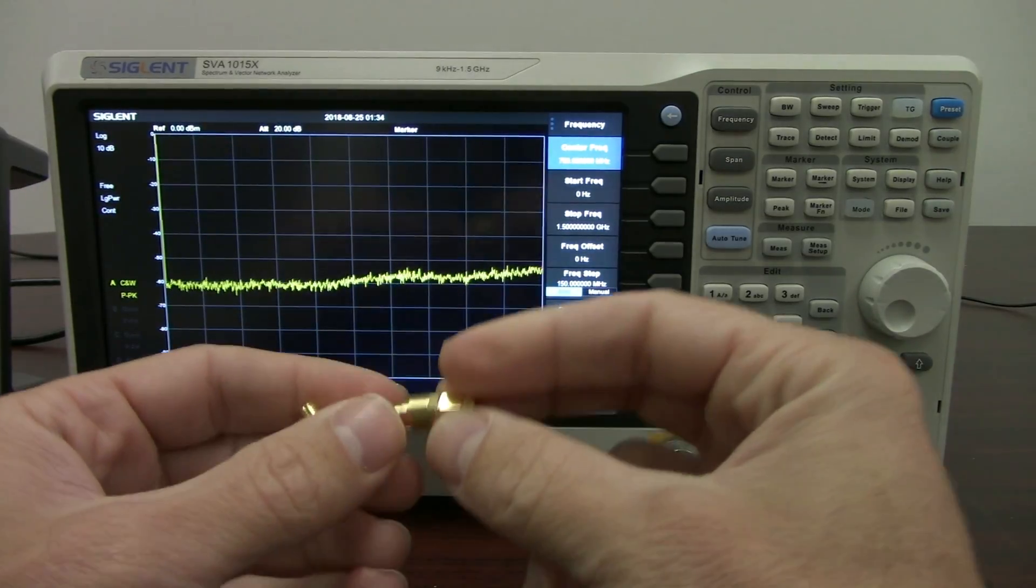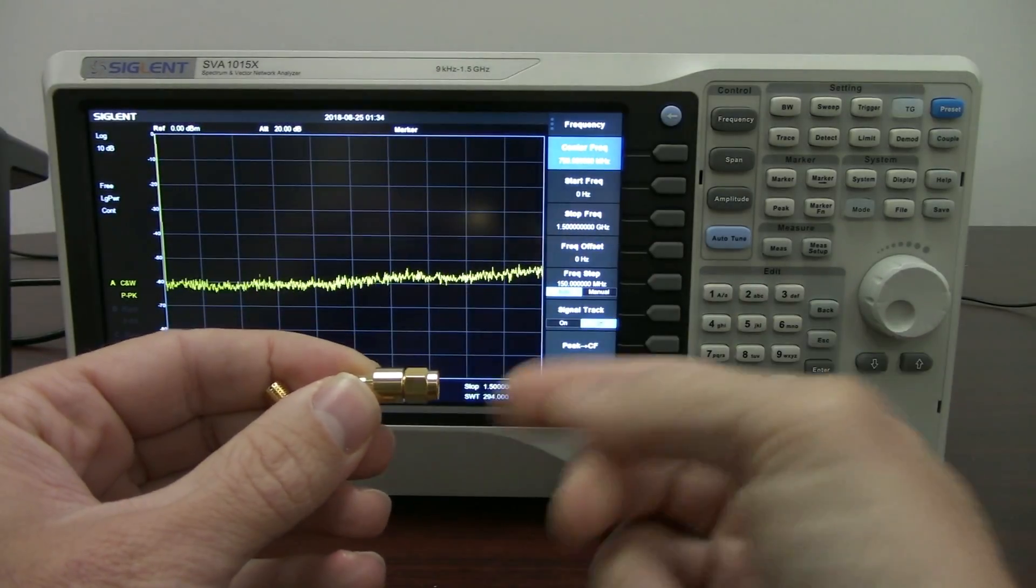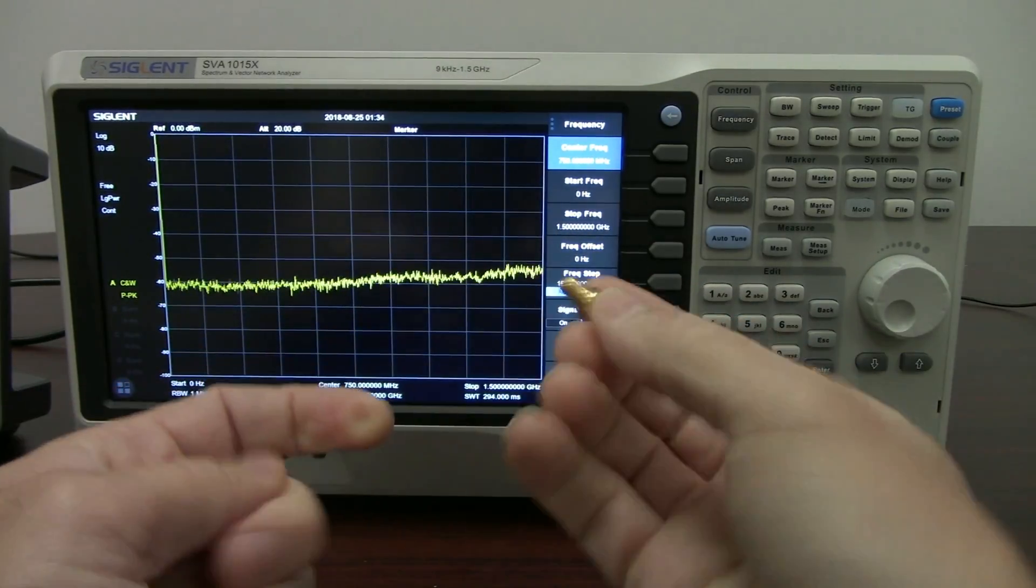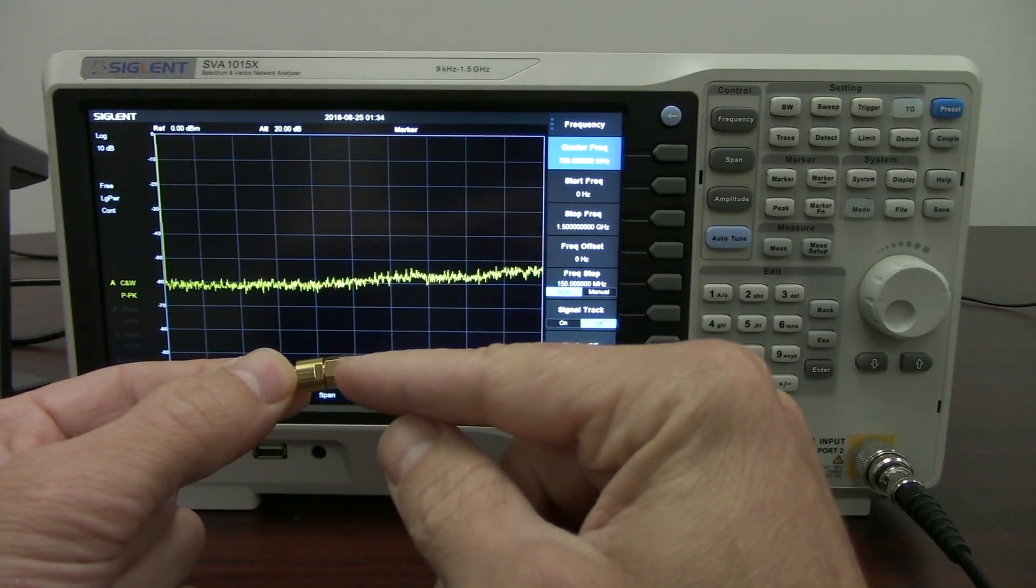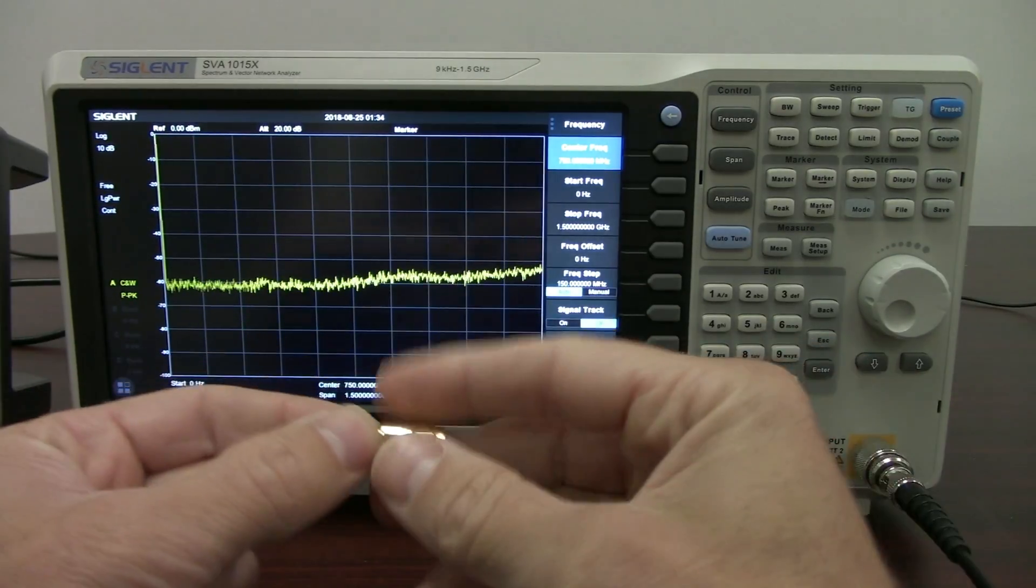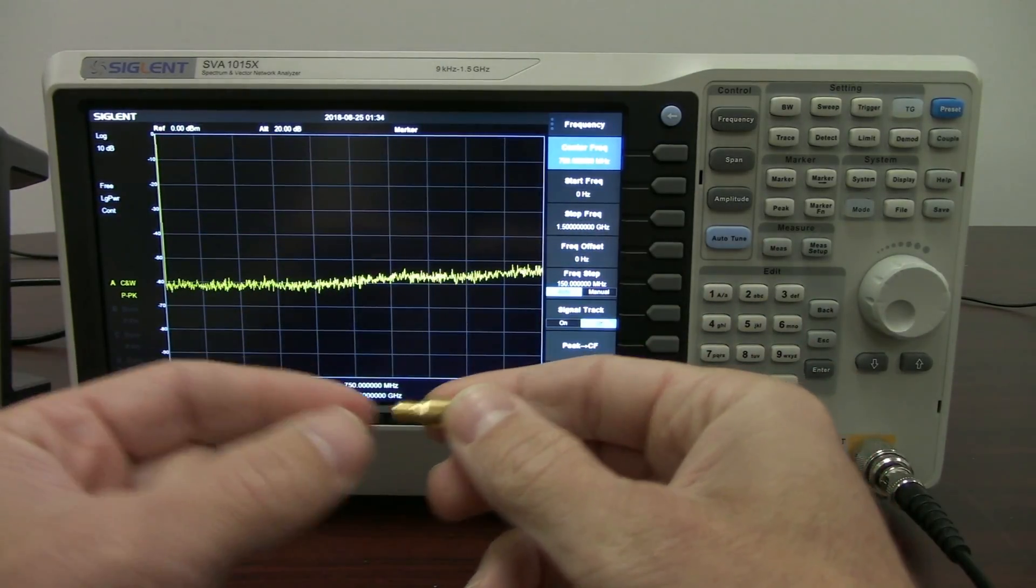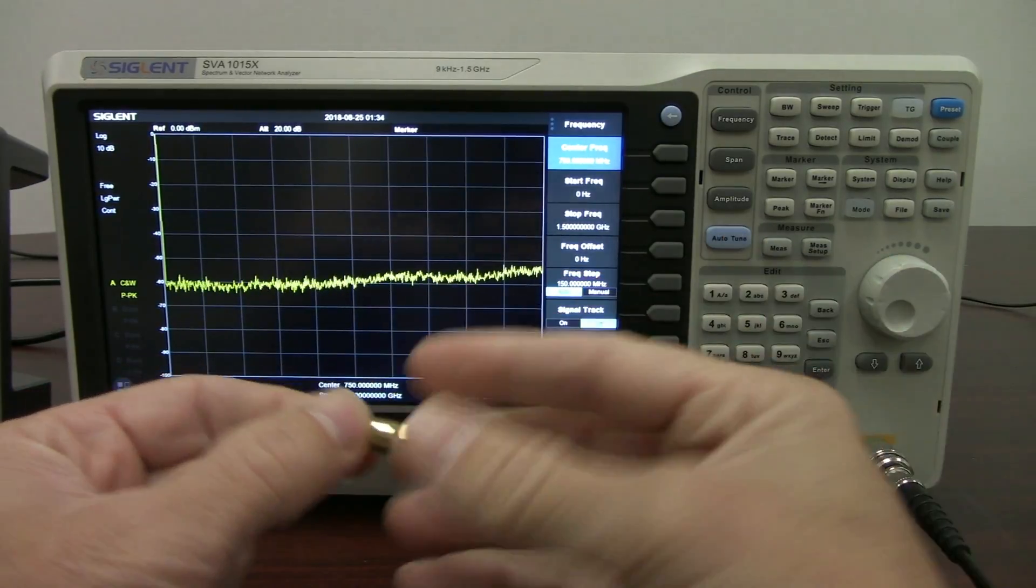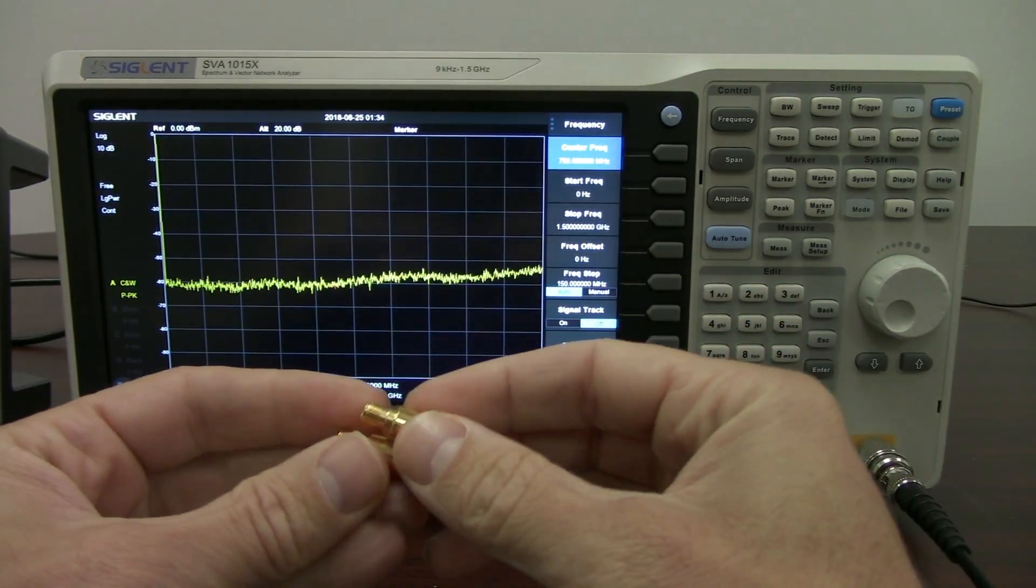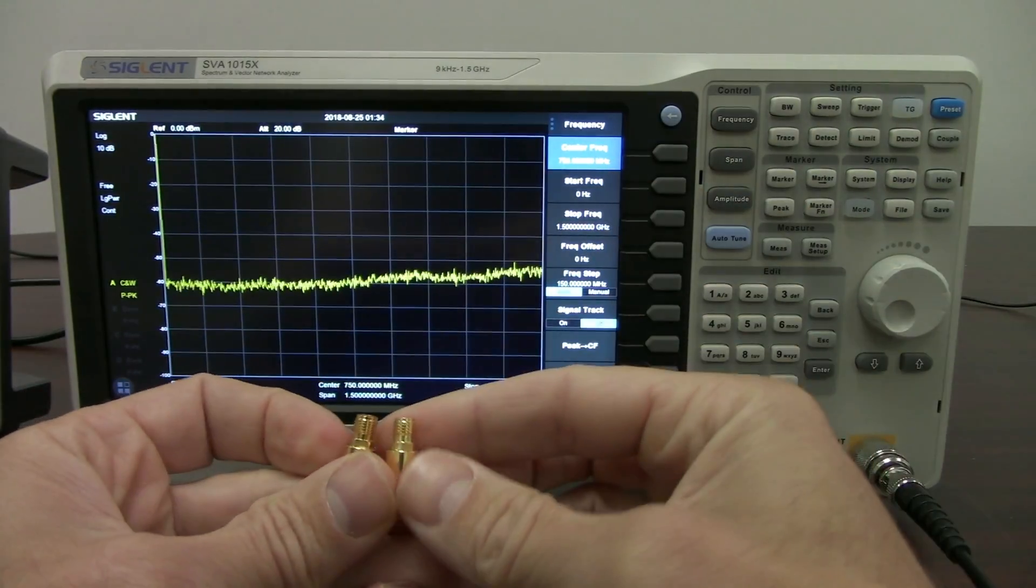For those of you that may not be aware, an attenuator is an element that will decrease the signal coming out. So if we have 0 dBm coming in, we're going to have minus 10 dB coming out, or if it's a 10 dB attenuator, or if it's a 0 dB in and we've got a 20 dB attenuator, we'll get 20 dB out. So it helps to knock the signal down or decrease the amplitude of the signal going into the next element of the circuit.